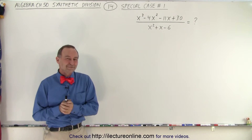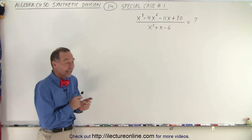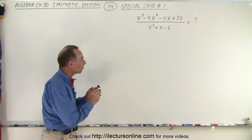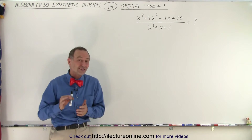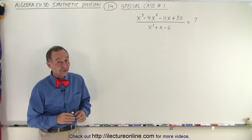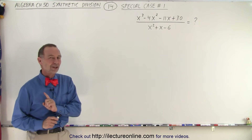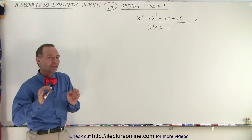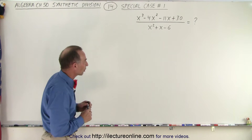Welcome to ElectroLine. Now let's take a look at this special case. Look at this denominator: x squared plus x minus 6. Can we use synthetic division on something like this? And the answer is yes we can. But this is how it's done. We have to take one special technique, one extra step, and you'll see how that works.